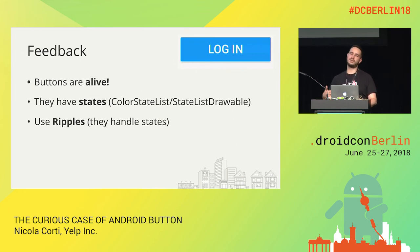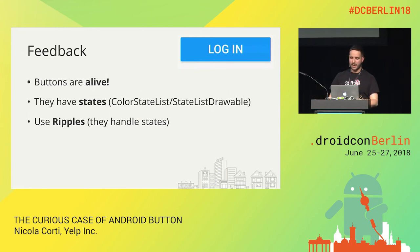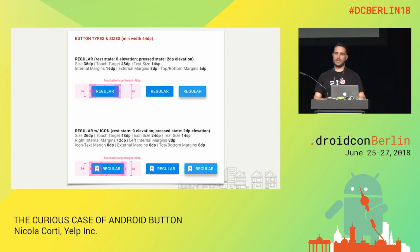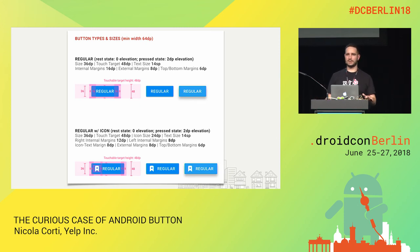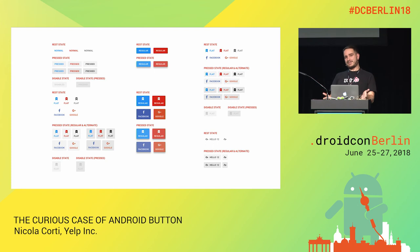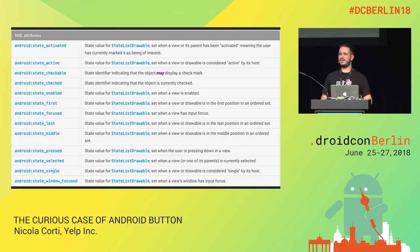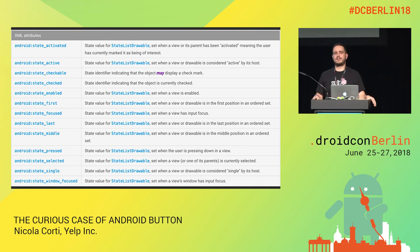Use ripples — they're awesome and already handle a lot of states. If you look at the ripple drawable code, you'll see it checks whether the widget is focused, disabled, or enabled. Also, don't forget to animate the shadows — this is done by default by the Android framework, but if you want to customize that, make sure you're still animating them. Stress your designers to have the whole lifecycle of your buttons — buttons are not just colored rectangles. They can be disabled, pressed, focused. You want to end up with something like a collection of all your buttons in all their states, and then iterate on that with your designers.